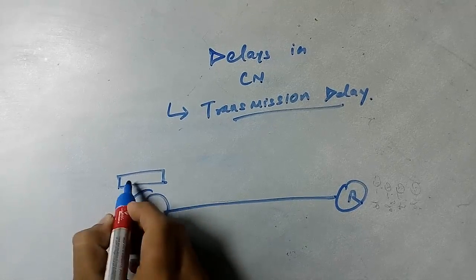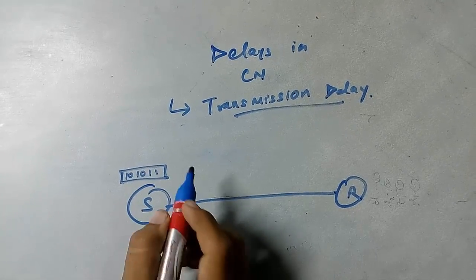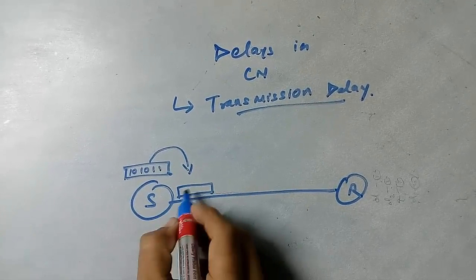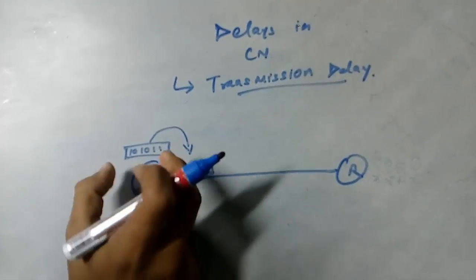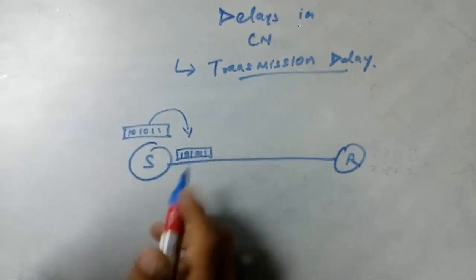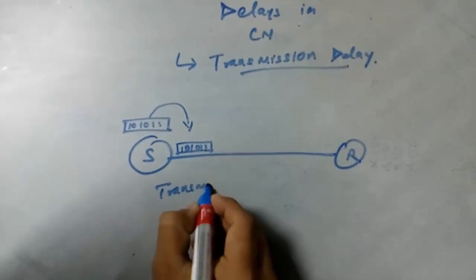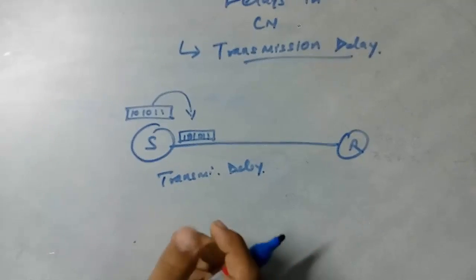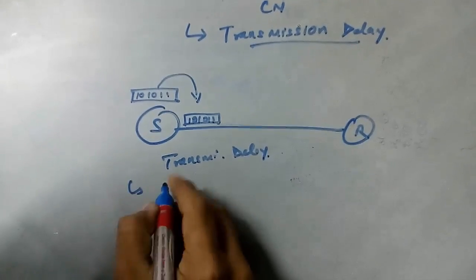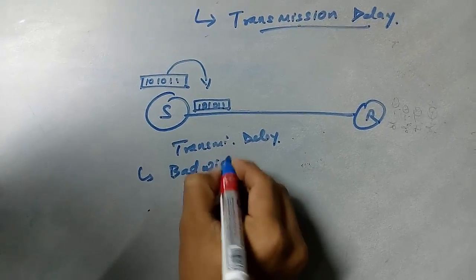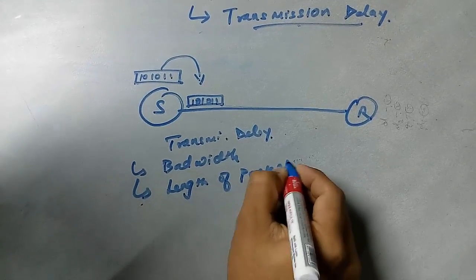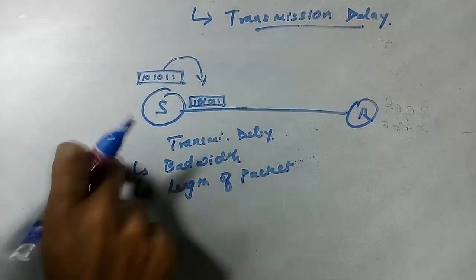Suppose you want to send a packet which consists of bits. The time taken by the packet to come onto the link is known as transmission delay. The factors that affect transmission delay are: first, the bandwidth, and second, the length of the packet.